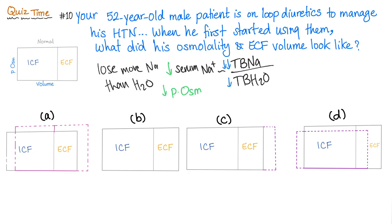When the plasma osmolality decreases — here is your cell and here is the extracellular fluid — what happens when the osmolality outside decreases? Water is going to shift from the ECF into the ICF because now the ICF is more concentrated. It's called osmosis. So the plasma osmolality decreases, so the y-axis on the graph has to decrease.